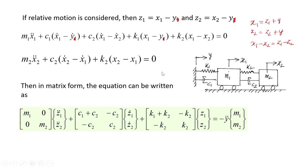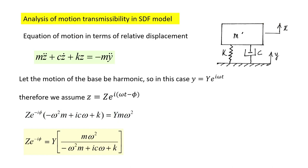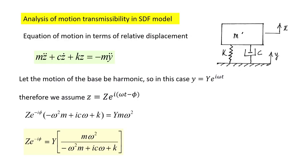Now let us see how much base motion is transmitted to the main mass, for a single degree of freedom or multi-degree of freedom or continuous system founded on a rigid but moving base. Our aim is to find the transmissibility of the base motion. The equation of motion in terms of relative displacement is: m·z-double-dot plus c·z-dot plus k·z = minus m·y-double-dot.